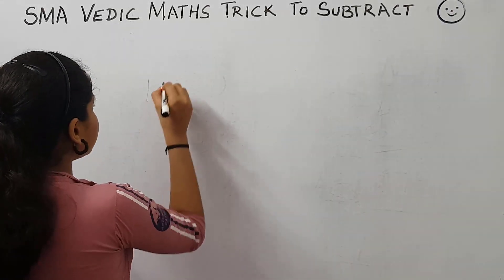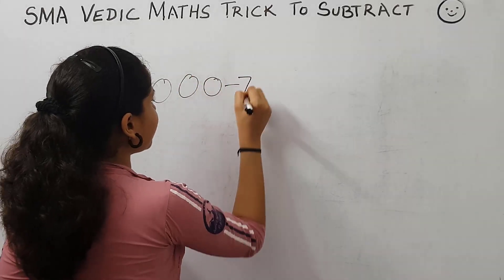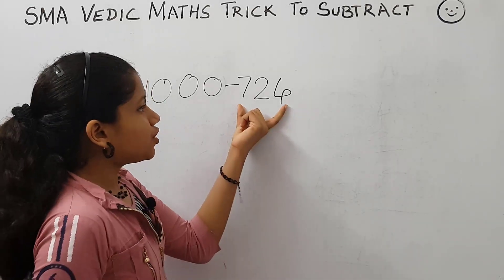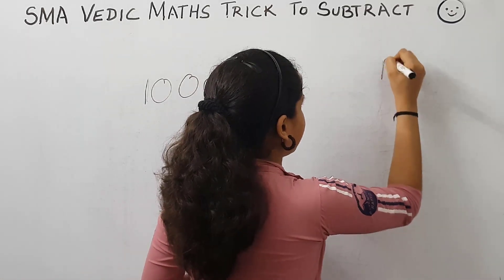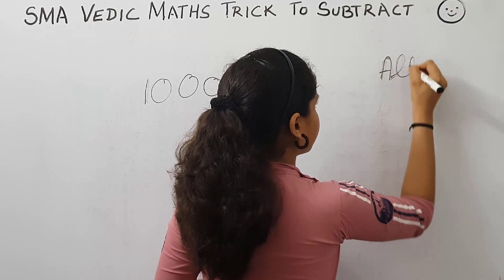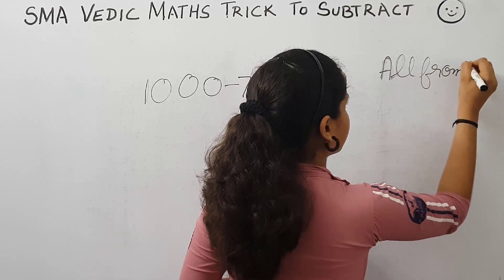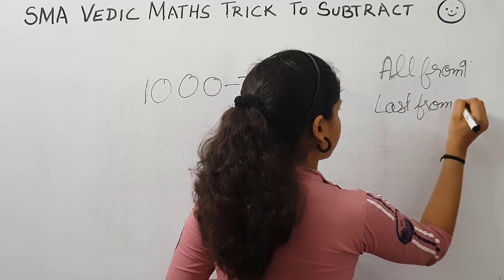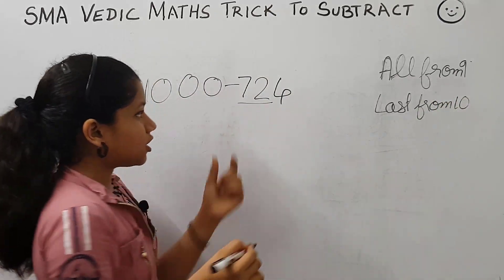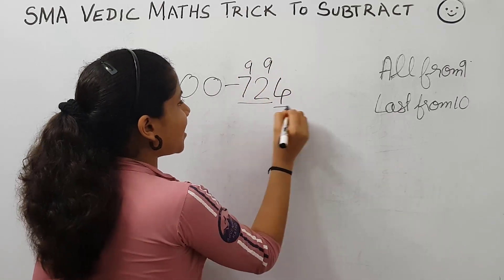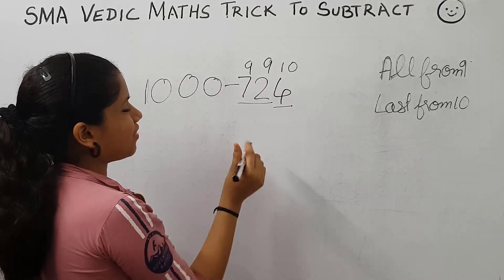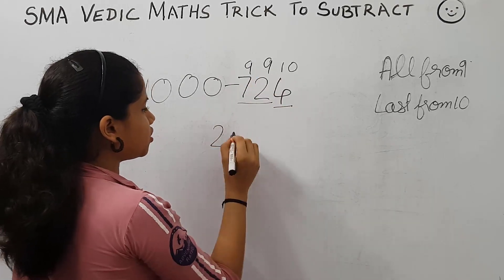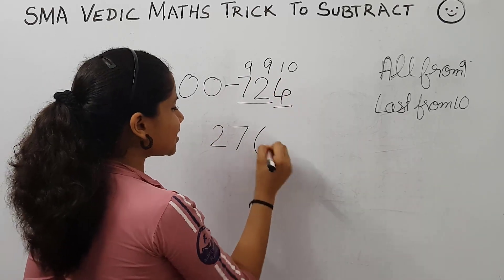The question is 1000 minus 724. Here there are three zeros and three digits, so we apply the rule: all from 9 and last from 10. The first digits are subtracted from 9, and the last from 10. 9 minus 7 is 2, 9 minus 2 is 7, 10 minus 4 is 6. The answer is 276.